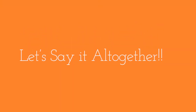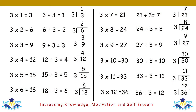Now let's say it all together. Three ones are three; three into three, one. Three twos are six; three into six, two. Three threes are nine; three into nine, three. Three fours are twelve; three into twelve, four. Three fives are fifteen; three into fifteen, five. Three sixes are eighteen; three into eighteen, six. Three sevens are twenty-one; three into twenty-one, seven.